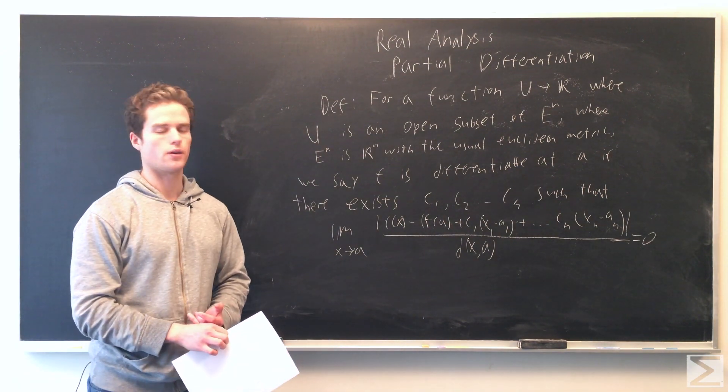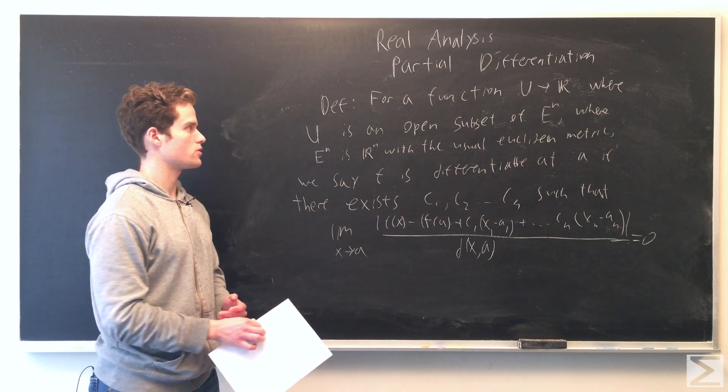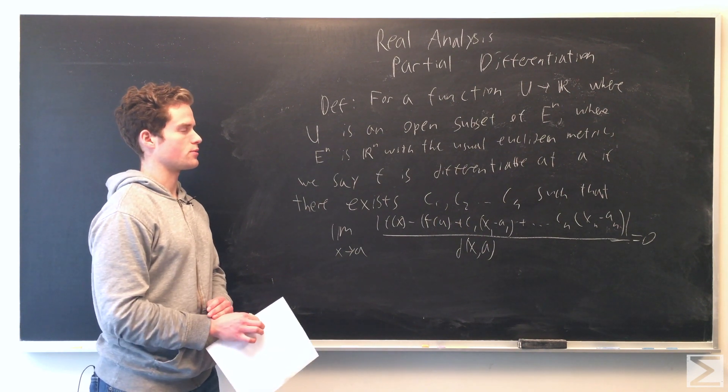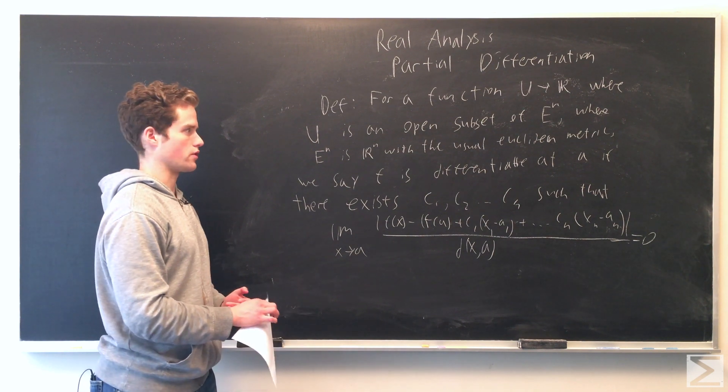Given a function, we define its domain as U, its co-domain is R (real numbers). U is an open subset of E^n, where E^n is just R^n with the Euclidean metric.